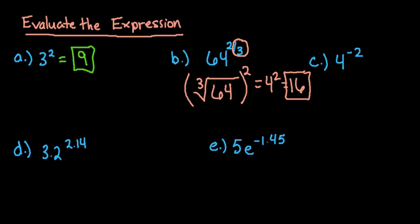Okay, 4 to the negative 2 power. Remember that a negative exponent means it's dividing, so this is really 1 over 4 squared. So we would end up with 1 16th. So with this one, depending upon how you are asked to put your answer,